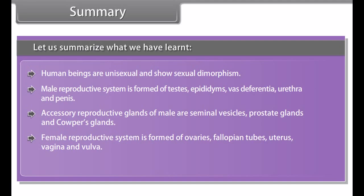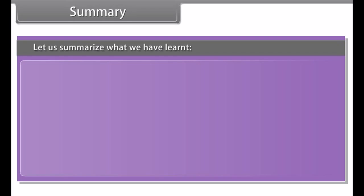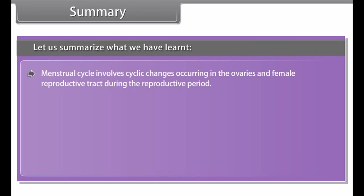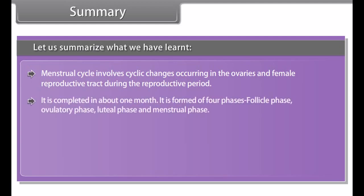The breakdown and removal of the inner thick and soft lining of the uterus along with its blood vessels in the form of vaginal bleeding is called menstrual flow or menstruation. The cycle of events taking place in the ovaries and uterus every 28 days, roughly one month, marked by the menstrual flow, is called the menstrual cycle or sexual cycle in the human female. It lasts for about two to eight days.